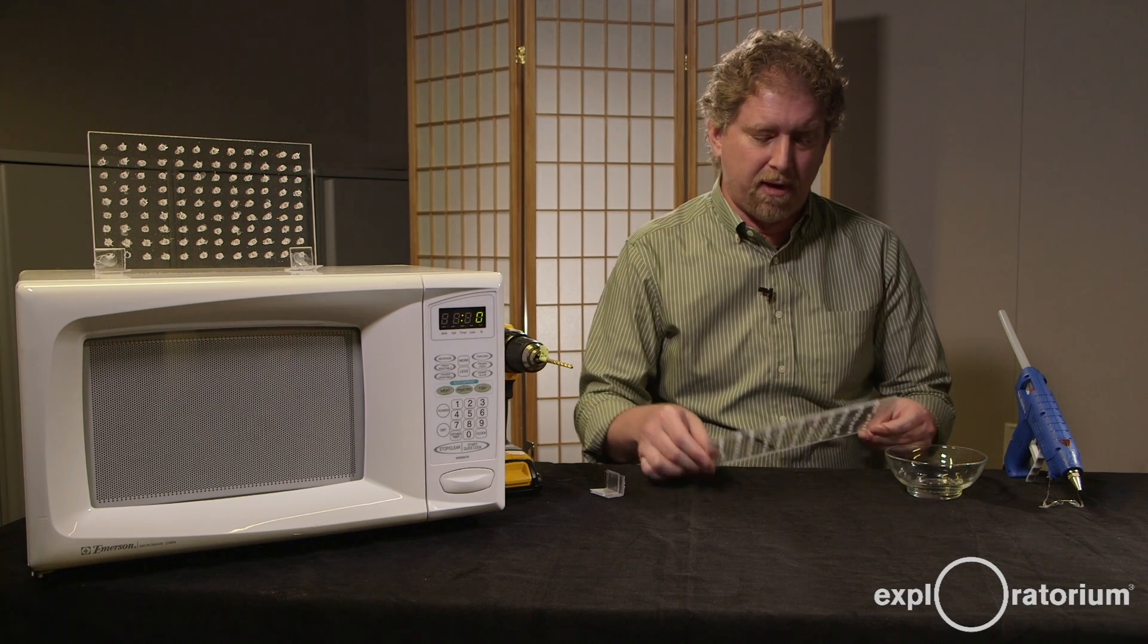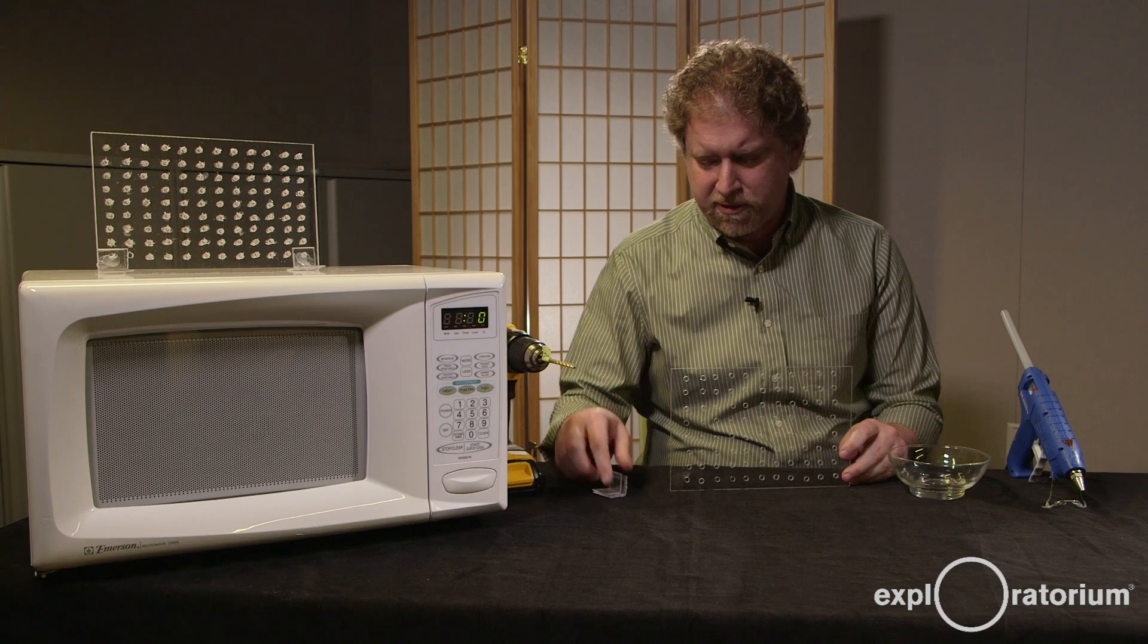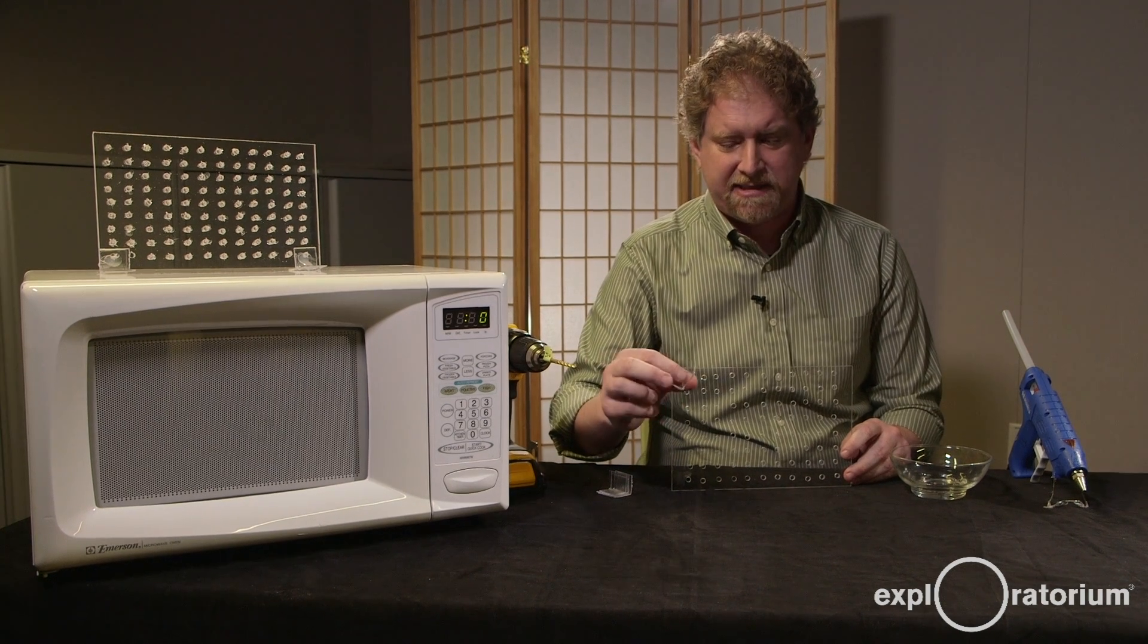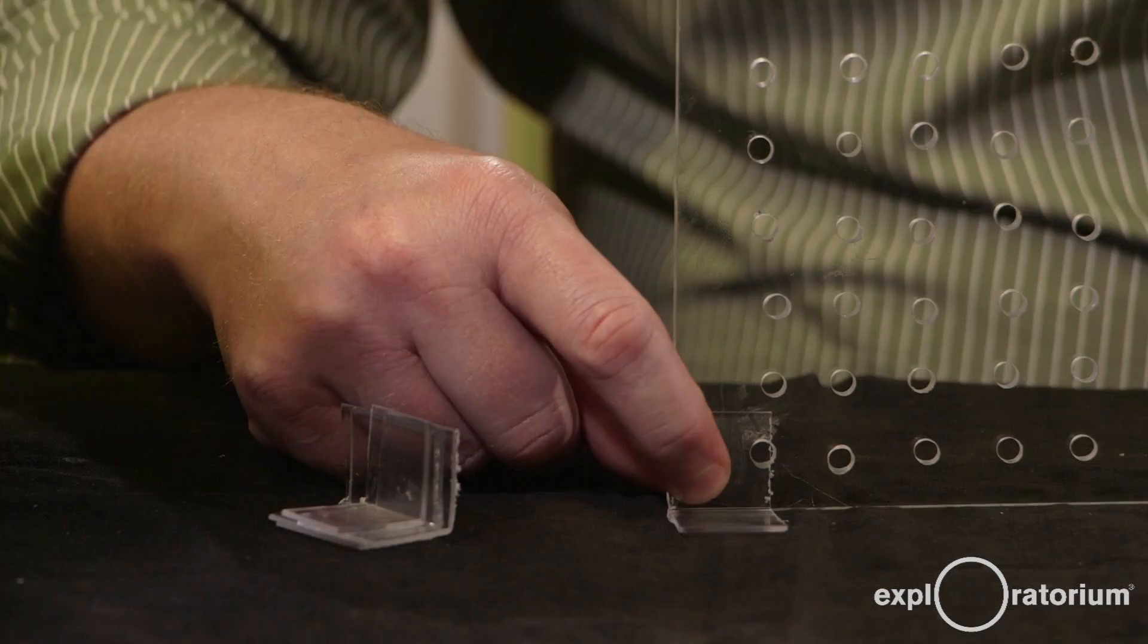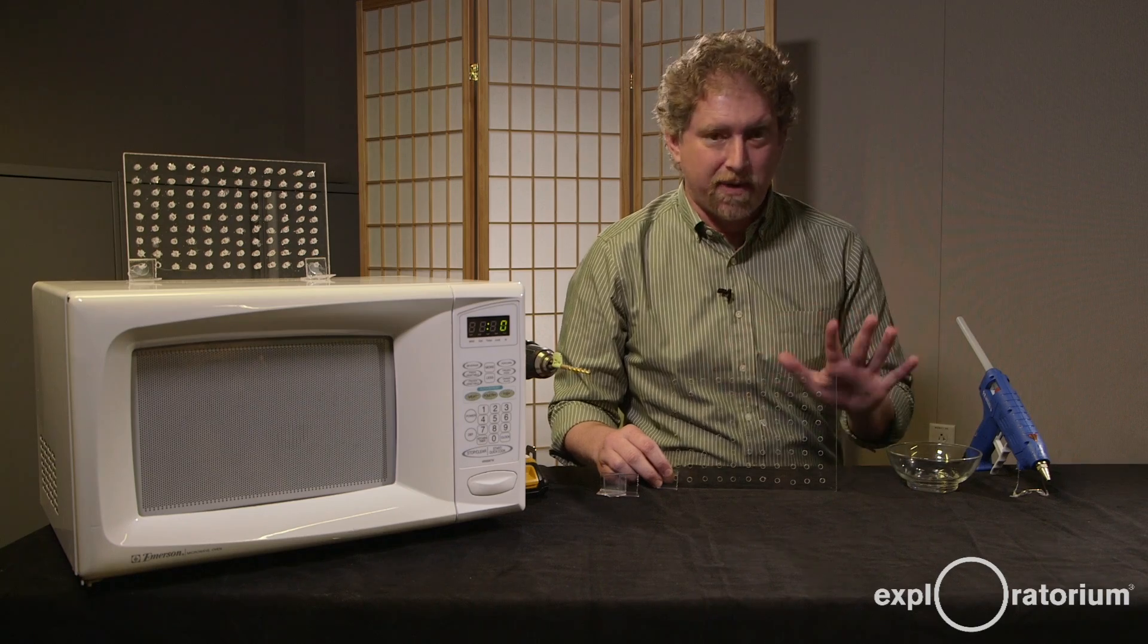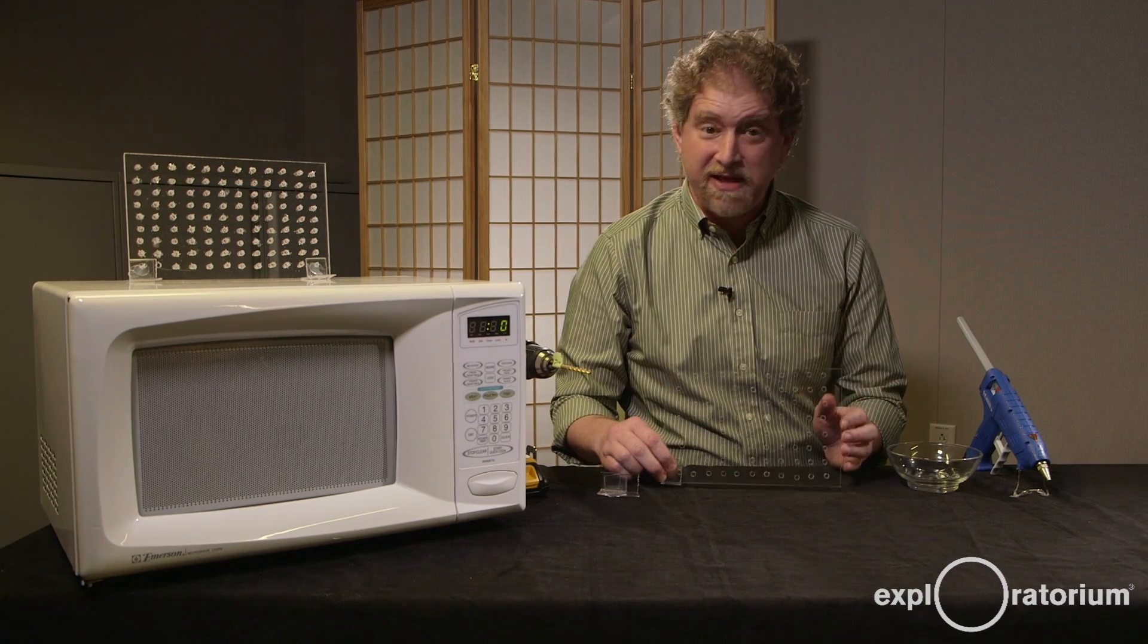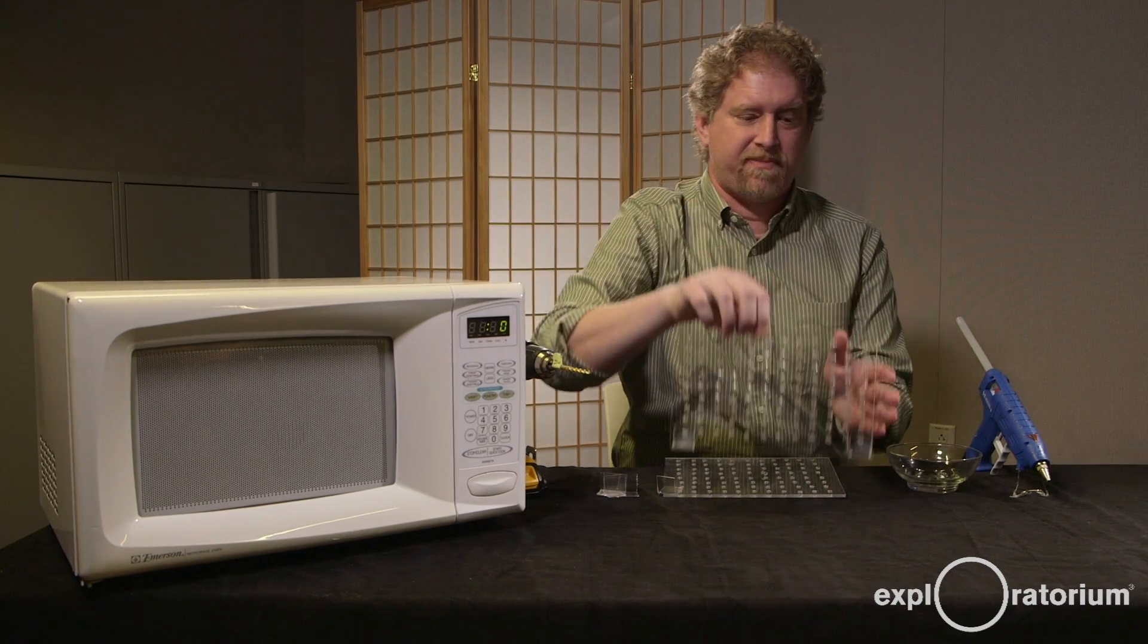Once you're done with putting all the bulbs into it, then you need feet to hold it up. And there are a lot of things you can use, but I found these little pieces of plastic that are used for signs. You can glue them on with hot glue to make feet for it. Once you put all the bulbs in and glued on the feet, you're really done. And you'll get a grid that looks something like this.